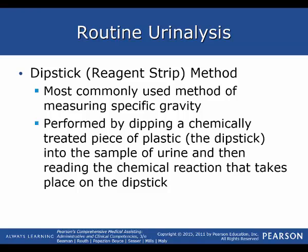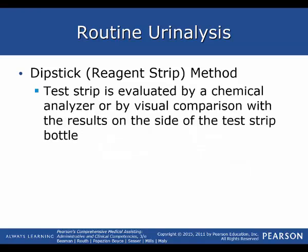Most of you will be using the dipstick method, also called the reagent strip method, which we will practice in class. This is the most commonly used method of measuring specific gravity. It's performed by dipping a chemically treated piece of plastic into a sample of urine and reading the chemical reaction on the dipstick. You need to be very accurate in recording the color associated with the numbers on the stick. The test strip is evaluated either by a chemical analyzer or by visual comparison with the results on the side of the test strip bottle.